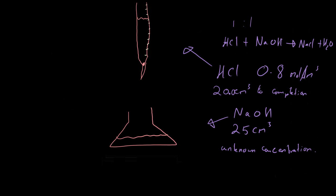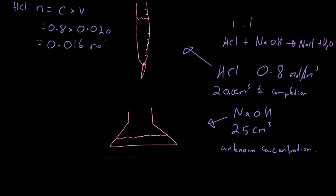Since I have both the volume and concentration of hydrochloric acid, I can calculate its moles: n = c × V. The concentration is 0.8 mol dm⁻³ and the volume is 20 cm³, which converts to 0.020 dm³. So the number of moles of HCl = 0.8 × 0.020 = 0.016 mol.